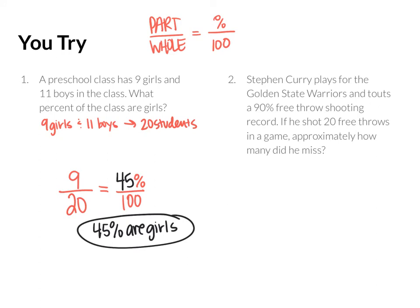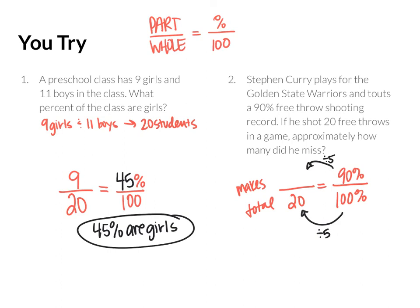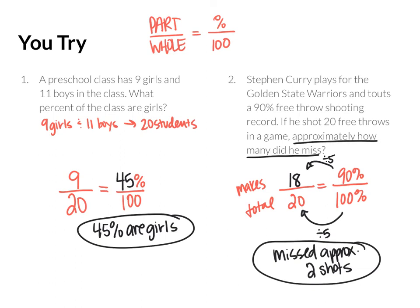For number two, Steph Curry plays for the Golden State Warriors and holds a 90% free throw shooting record. If he shot 20 free throws in a game, approximately how many did he miss? Let's go part to whole — he shot a total of 20, and we know he makes 90% out of 100%. We're trying to figure out how many he makes out of 20. 20 goes into 100 five times, so I divide 90 by 5, which gives me 18 shots made per game. The question isn't asking how many he makes — it's asking how many he missed. So he missed 2 of the 20 shots, because he would have made approximately 18.